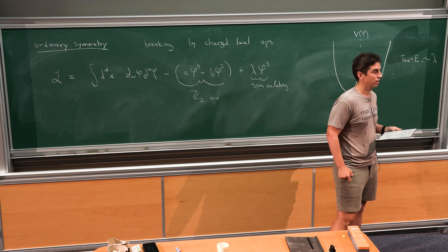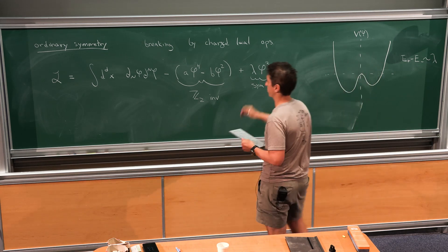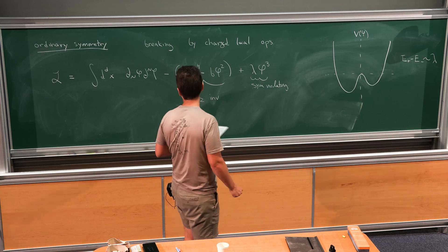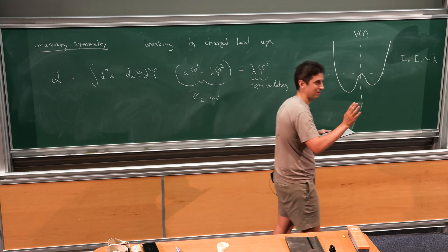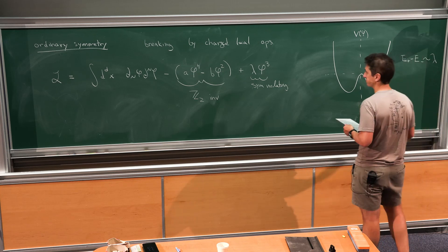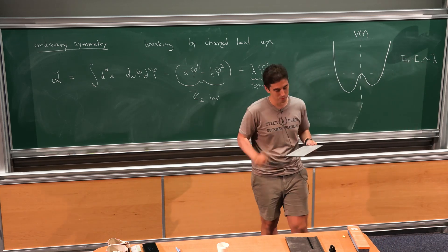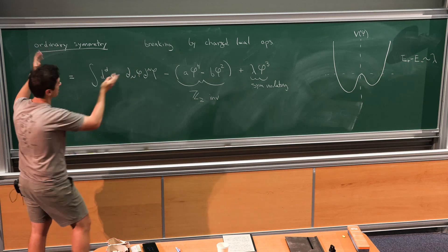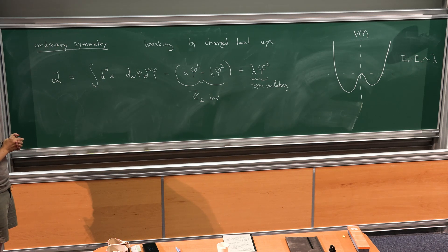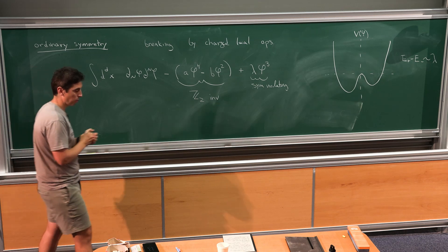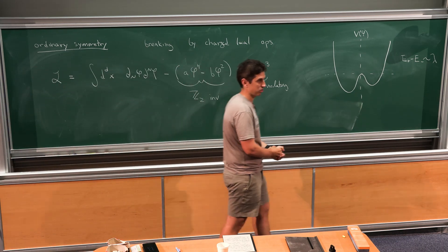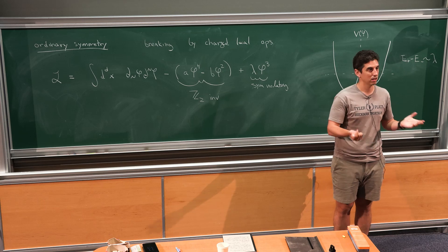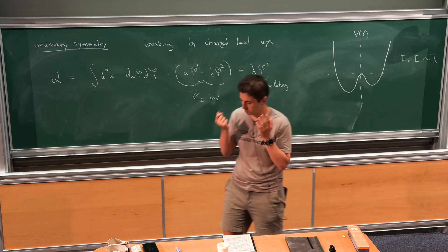A question: why phi cubed and not phi? Because you can remove phi by a shift, so phi cubed is more fundamental, at least if you think about the critical line. We want to develop as close an analog as possible for higher symmetry — one-form symmetry, non-invertible symmetry, higher group symmetry. What are the symmetry breaking mechanisms and what do they teach us about various effective field theories? That's the main theme.